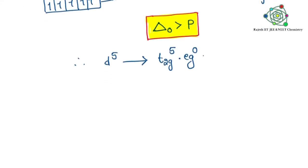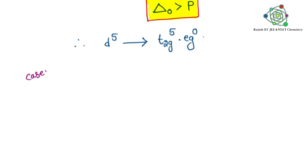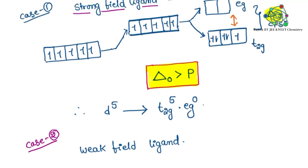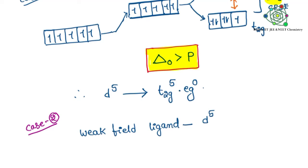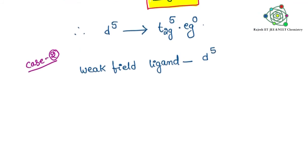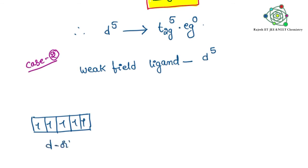Now coming to Case 2, where we are taking a weak field ligand in an octahedral complex. Here also the metal atom or ion has a d5 configuration, meaning the d-orbital has five electrons. The content is the same up to a point, but the final step is different. The five d-orbitals — dxy, dyz, dzx, dx²−y², and dz² — are five degenerate orbitals, each with one electron. When ligands come closer, the d-orbital energy increases.